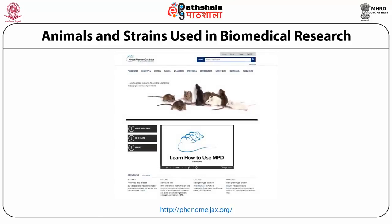This website shows details of all mouse strains available worldwide. Entering the website, you can see what strains are available, their genotypes, panels, QTL intervals, and other details. For example, if you want to study diabetes, you can click on strains and see what mouse models are available for that disease.